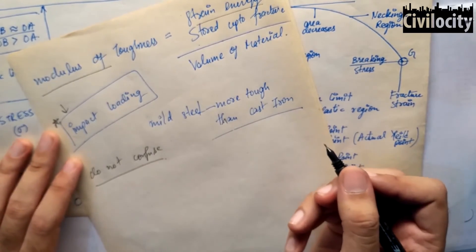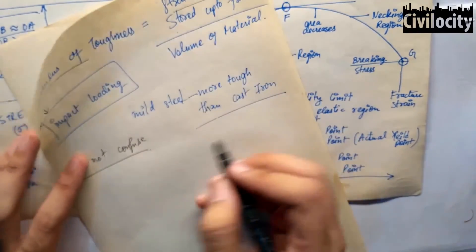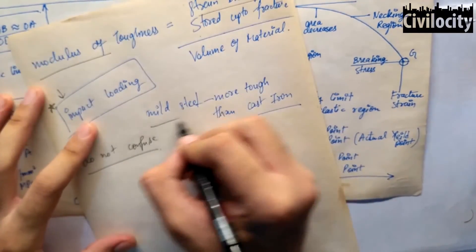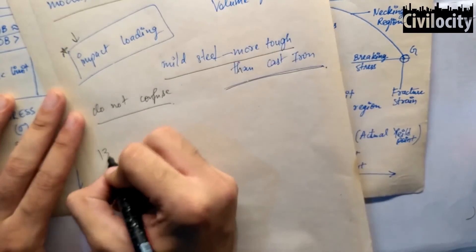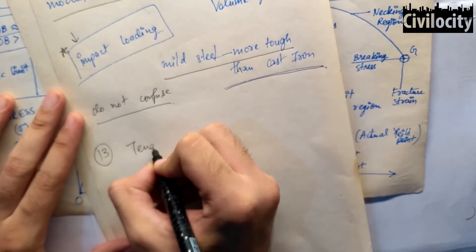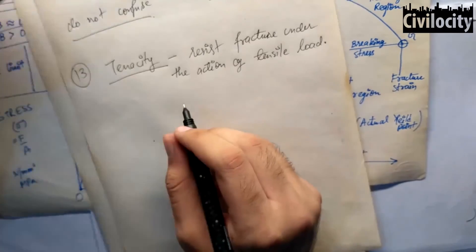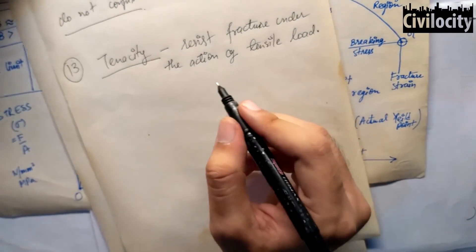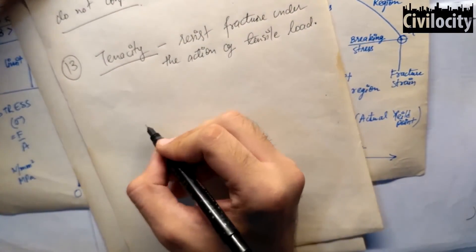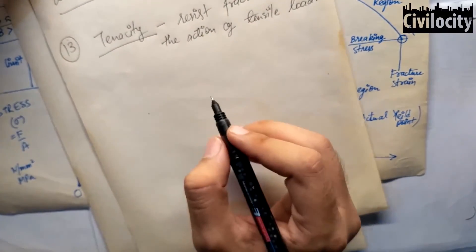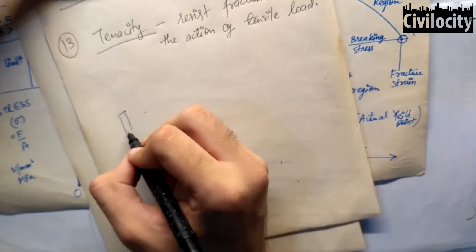The farther the fracture point, the tougher the material. This means mild steel is more tough than cast iron. Our last property is tenacity — it is the property of a material to resist fracture under the action of tensile load.